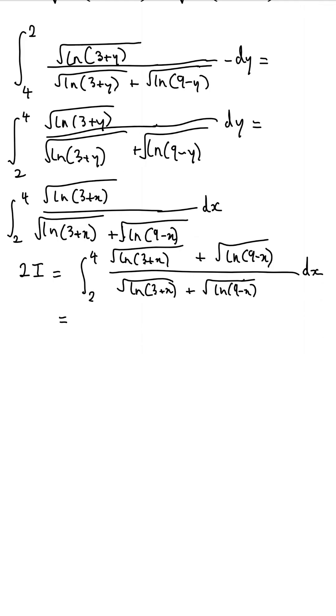Now it's clear the right hand side is just the integral from 2 to 4 of 1 with respect to x. This is clearly just going to be 2. We get that 2I is equal to 2 and therefore I is equal to 1. This is our final answer.